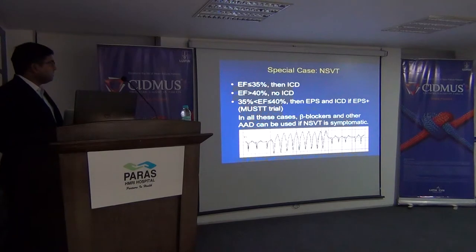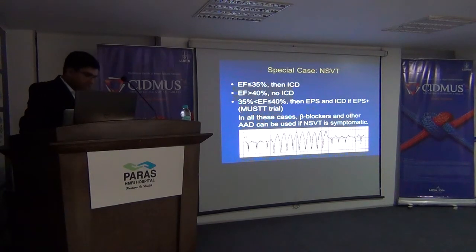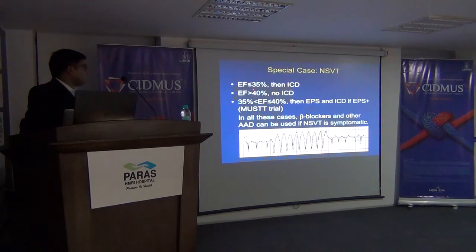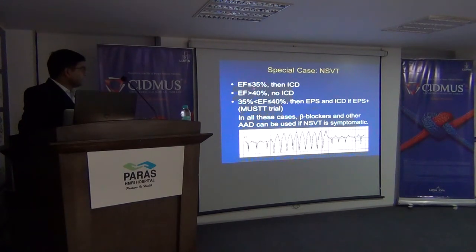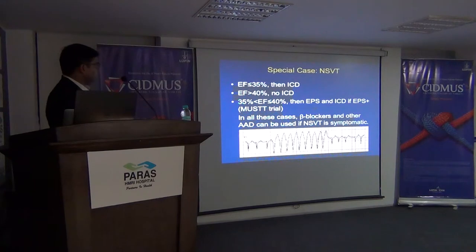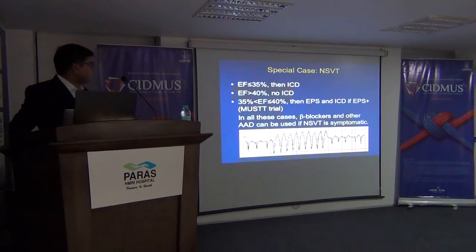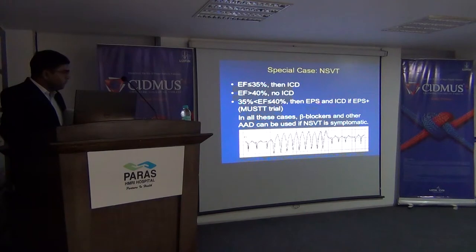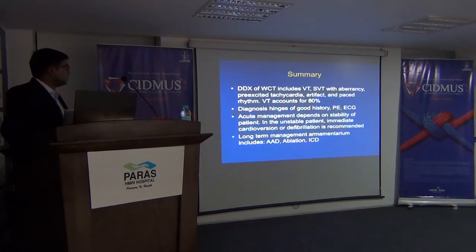Similarly, this is something interesting because a lot of times we get confused — shall we put in an ICD or not? If ejection fraction is less than or equal to 35%, ICD is indicated. But if the EF is more than 35%, definitely not. But if it is in between, you should do an EP study, because there is conclusive data from the MUSTT trial — that's what you should try to do.